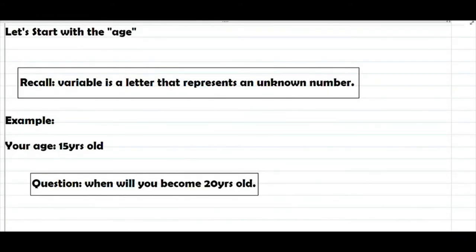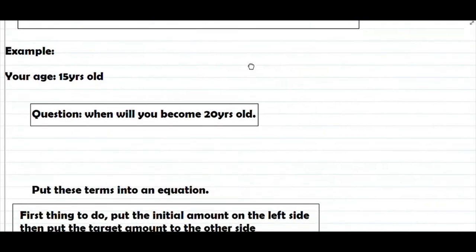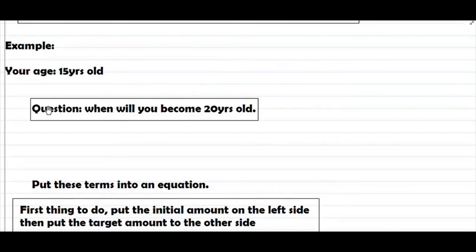Start na natin yung pag-relate ng variable sa manangyayari sa atin araw-araw. Let's start with the age o yung edad. Recall lang natin: variable is a letter that represents an unknown number — yung A, B, C, D, E, F, G, up to letter Z. Ang example is ang edad mo daw is 15 years old. Ang magiging question na at our problem is: when will you become 20 years old? Put these terms into an equation.